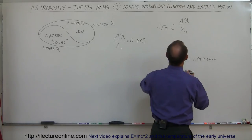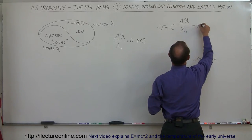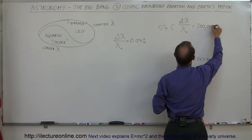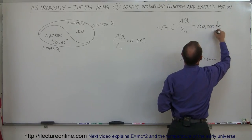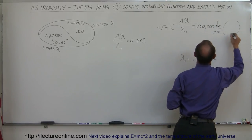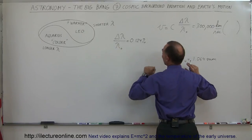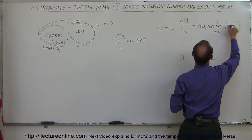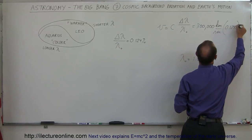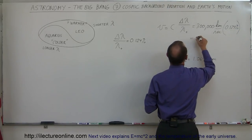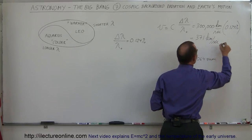So in this case, c being the speed of light, this is equal to 300,000 kilometers per second. And if we then multiply times this ratio and we use the cosmic background radiation shift, we put in 0.124 percent and calculate. That ended up being a velocity of 371 kilometers per second.